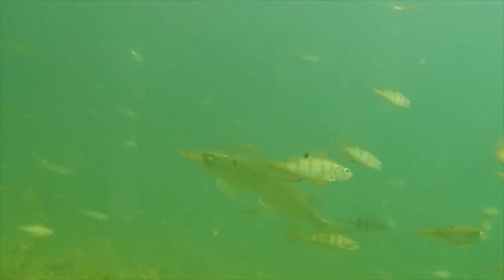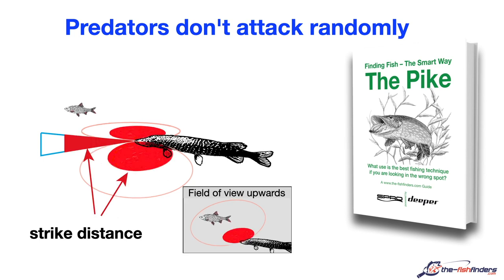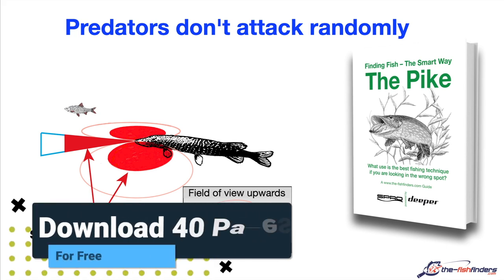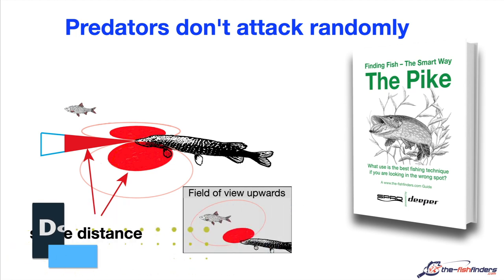Nevertheless, this does not mean that it will necessarily attack. First of all, it stays alert — namely to the front, the sides and also above it. Then there is a strike distance, that is the distance between the pike and the prey where the pike makes a decision: now I probably have the highest chance to capture my prey. That is because predators do not like to waste energy. They do not randomly attack all prey; rather they focus on the prey where they will put the least effort to capture.